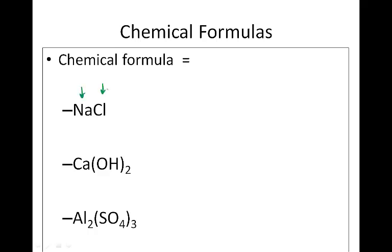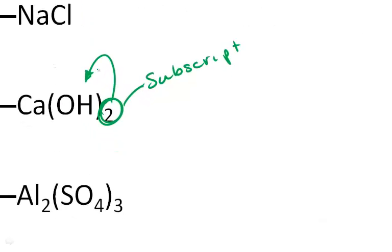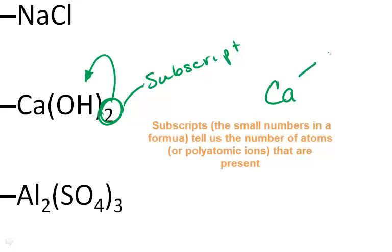In these formulas, like CaOH₂, this 2 is called a subscript. This subscript tells us the number of — in this case — polyatomic ions. So calcium hydroxide, Ca(OH)₂, has two hydroxides.